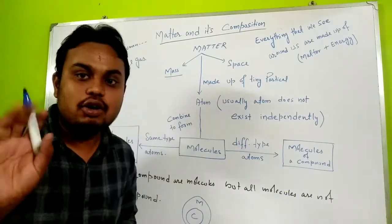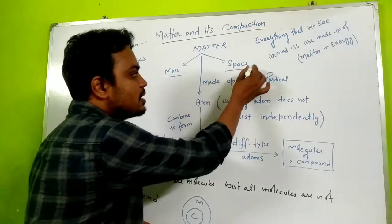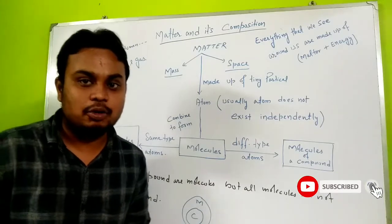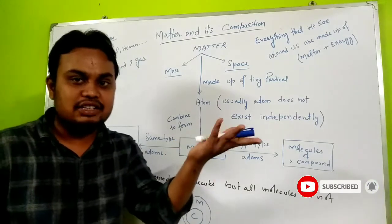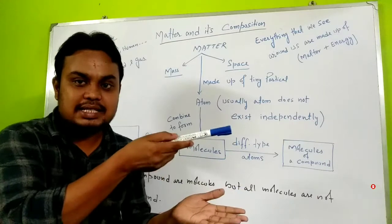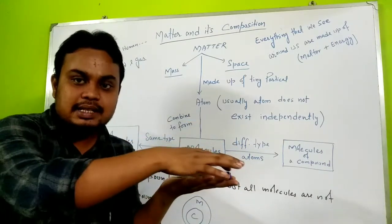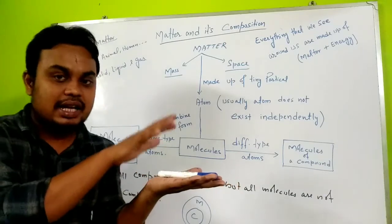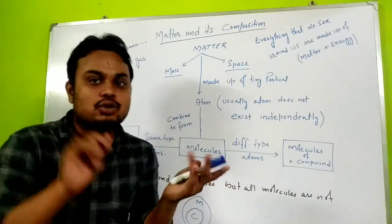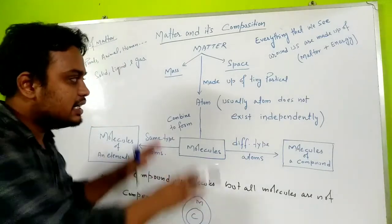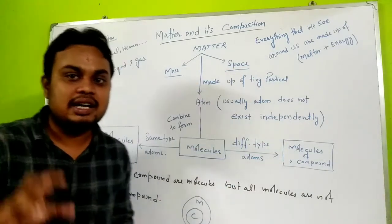It occupies space and has mass. If you place this pen, it covers some space. This is a whiteboard - see, it has mass and occupies space, so it is matter.